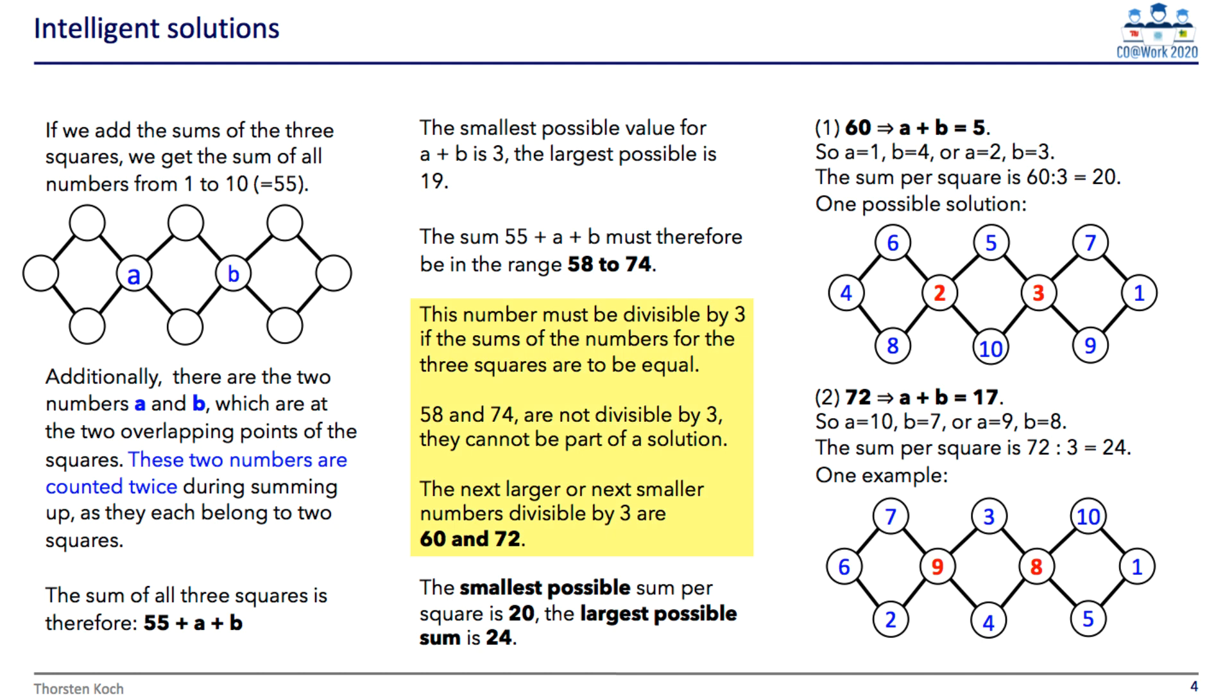But we can still strengthen these bounds by observing that the solution must be divisible by 3, so we can round this up to 60 and down to 72. At 60 it means 20 per square, therefore A plus B must be equal to 5, leaving us either 1 and 4, or 2 and 3. From then on there are not so many choices left.